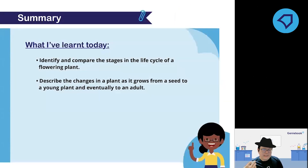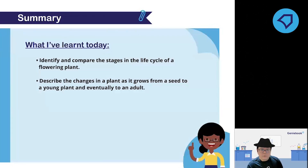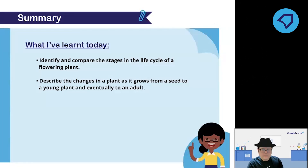We have identified the different stages of the flowering plant life cycle and described what changes as a plant grows from a seed to a seedling and eventually into an adult plant. If you have any questions you can ask now; otherwise you may leave.